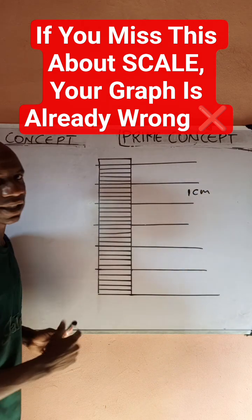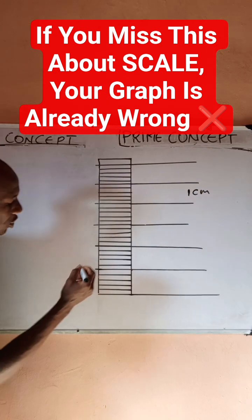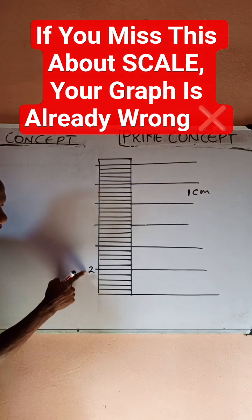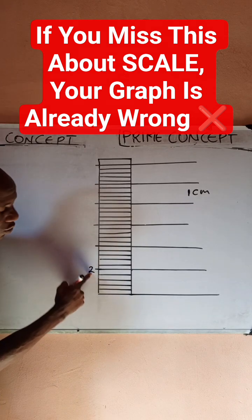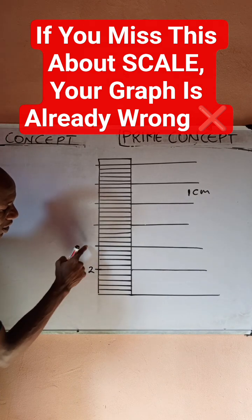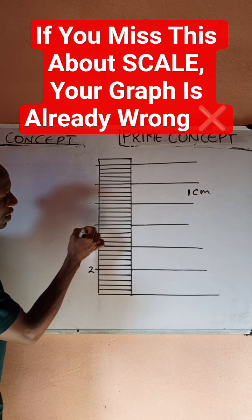For example, I may choose to put 2 here and increase this by a unit of 2. So if this is 2, the next place should be 4, this should be 6, 8, and so on.